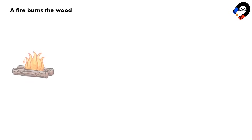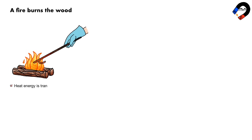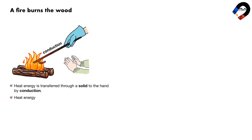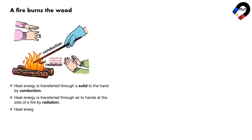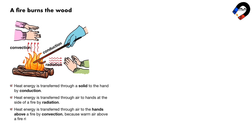When wood burns in a fire, heat energy is transferred through a solid to the hand by conduction. Heat energy is transferred through air to hands at the side of a fire by radiation. Heat energy is transferred through air to the hands above a fire by convection, because warm air above a fire rises — warm air is less dense than the surrounding air.